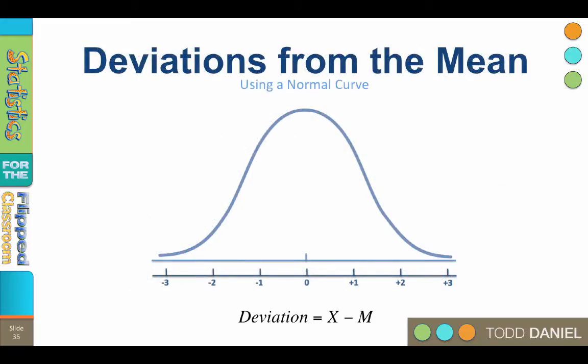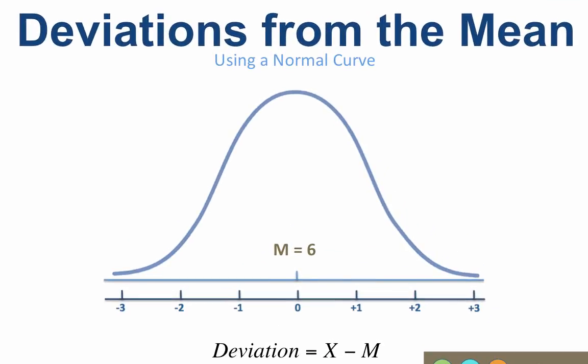Here is a normal curve with a mean of 6. Beneath the normal curve, I have created deviation scores above and below the mean. A person with a deviation score of negative 3 is 3 points below the mean and has a raw score of 3. A person with a deviation score of positive 1 is 1 point above the mean and so has a raw score of 7. The deviation of negative 1 is a raw score of 5.